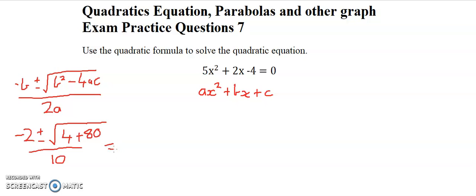Now we just need to simplify. The answer is negative 2 plus or minus 9.165 over 10.